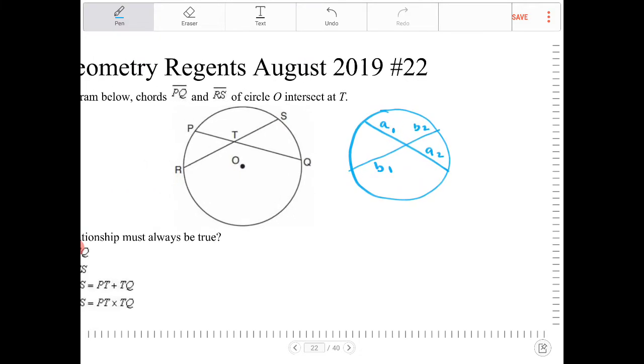The partitions, the product of the partitions of one chord, as it turns out, is going to equal the partitions of the second chord.